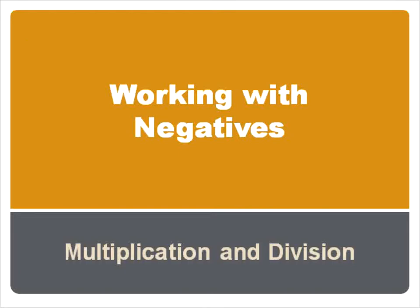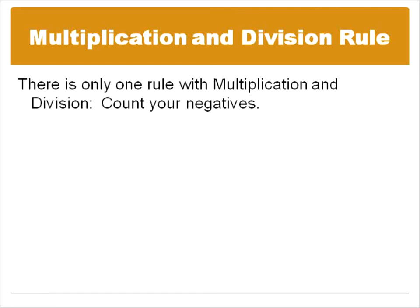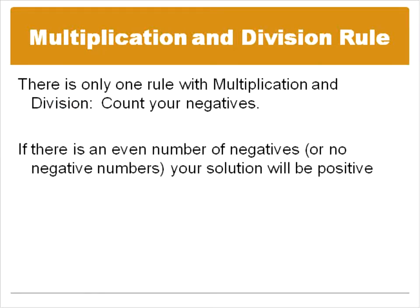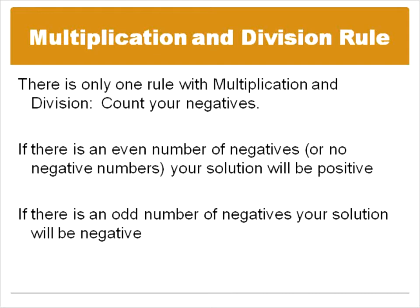Working with multiplication and division is actually a little bit easier than addition and subtraction because there's only one rule. Here's the rule: what you do when you are multiplying or dividing is that you count your negatives. That's it. When you count your negatives, determine how many there are. If there's an even number of negatives or no negative numbers, your solution will be positive. If there's an odd number of negatives, then your solution will be negative. And that's it — that's the whole rule.